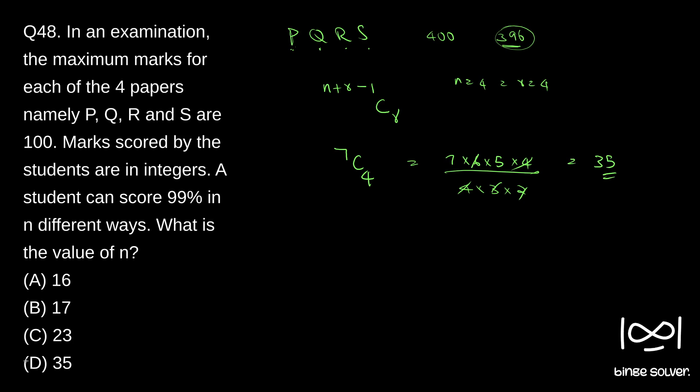So solution to question 48 is D, 35. So if you are not familiar with this concept, combination with repetition, I have done a video on this topic, permutation and combination. You can find that video in my playlist, basic concepts of mathematics. I have discussed this case in detail there.